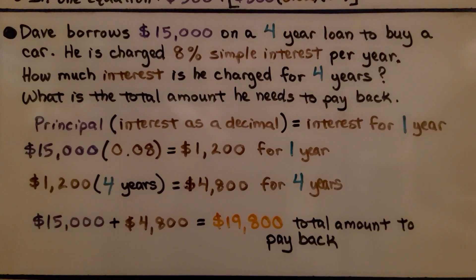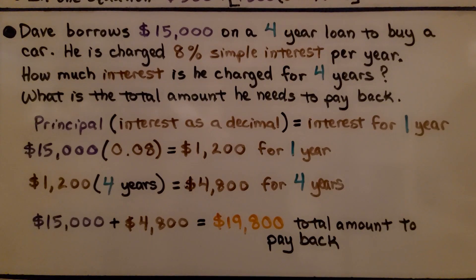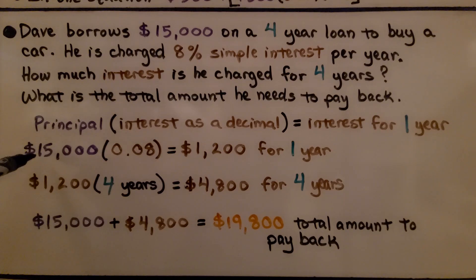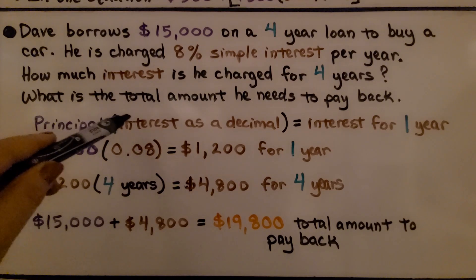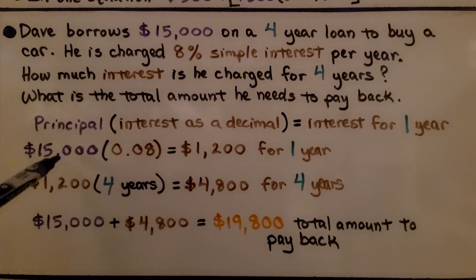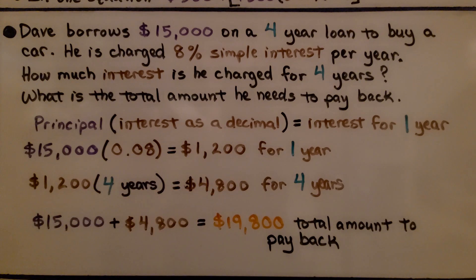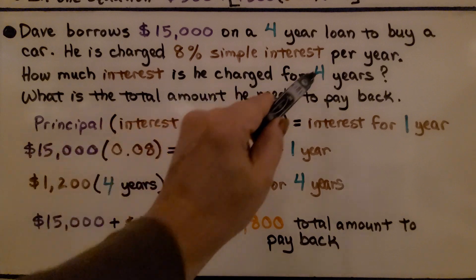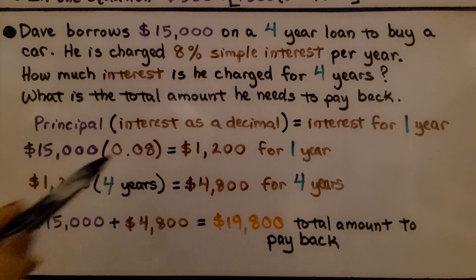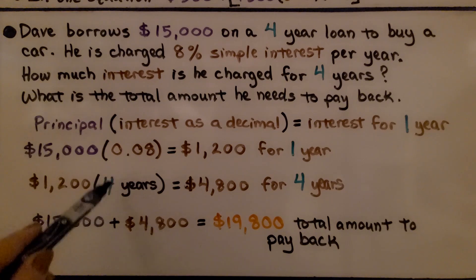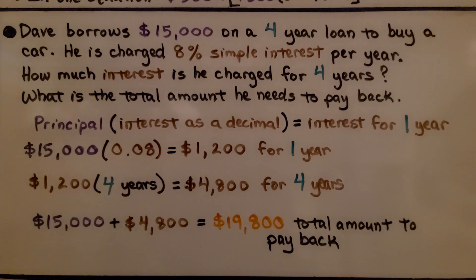Dave borrows $15,000 on a four-year loan to buy a car. He is charged 8% simple interest per year. How much interest is he charged for four years? We take the principal, $15,000, and multiply it by the interest written as a decimal: 15,000 times 0.08 equals $1,200 for one year. Because we need four years, we multiply $1,200 times four and get $4,800 for those four years.